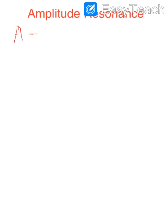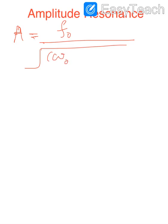Amplitude resonance is a phenomenon exhibited by a forced harmonic oscillator when the driving frequency approaches a particular value. It is the condition in which a forced harmonic oscillator oscillates with maximum amplitude at a particular driving frequency very close to the natural frequency of the oscillator. The amplitude of a forced harmonic oscillator is given by: a = f₀ / √[(ω₀² − p²)² + 4k²p²].